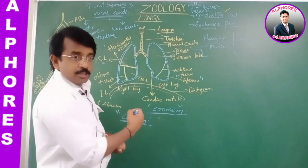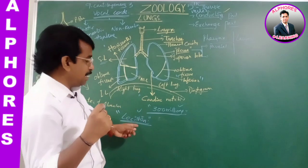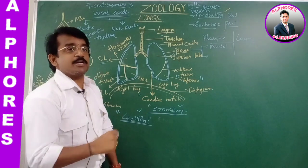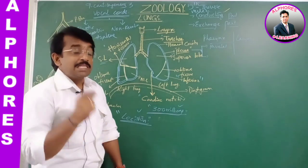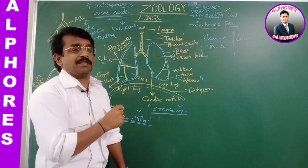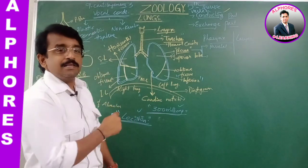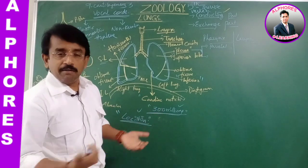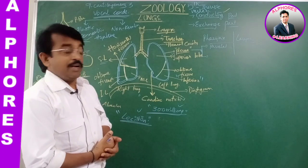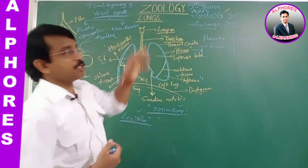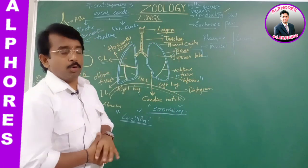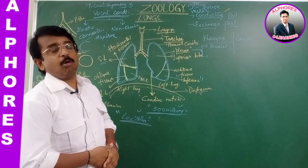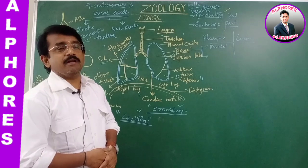Alveoli are lined by a thin membrane of lecithin, which reduces surface tension. Certain babies born with a genetic defect will lack lecithin, so collapse of the lungs is possible — this is a fetal condition. Apart from that, a smoking individual will have a threat of emphysema, which is one of the respiratory disorders.